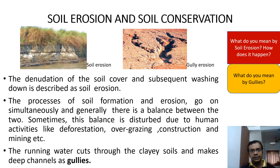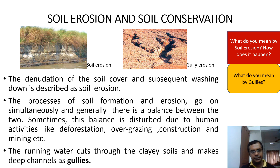What do we mean by soil erosion and how does it happen? The denudation of the soil cover and subsequent washing down is described as soil erosion. The process of soil formation and erosion go on simultaneously and generally there is a balance between the two. Sometimes this balance is disturbed due to human activities like deforestation, overgrazing, construction, and mining.